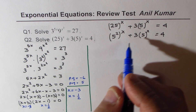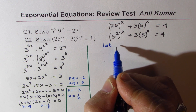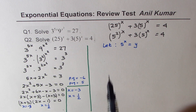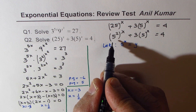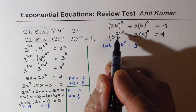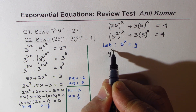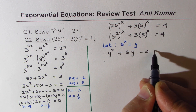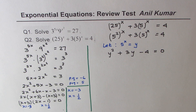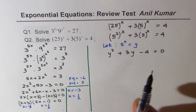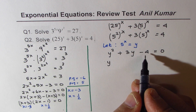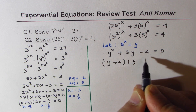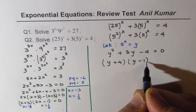Now if we substitute 5 to the power of x as y, then the first term gives us 5 to the power of 2x, which is y squared, plus 3 times 5 to the power of x gives us 3y. Bringing 4 to the left side gives us y squared plus 3y minus 4 equals 0. This is a quadratic equation which can be factored as (y plus 4)(y minus 1) equals 0.